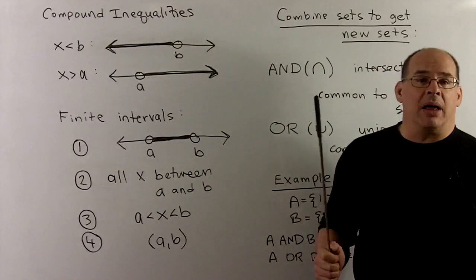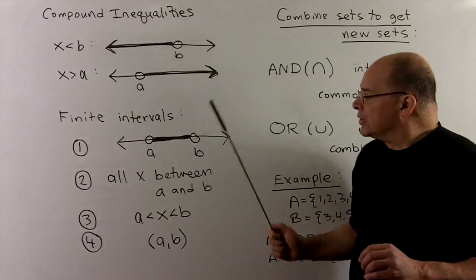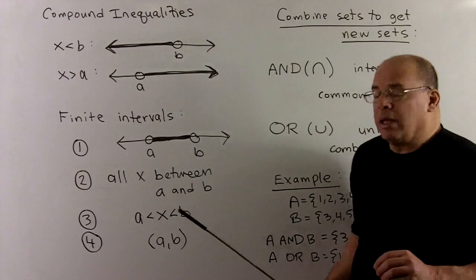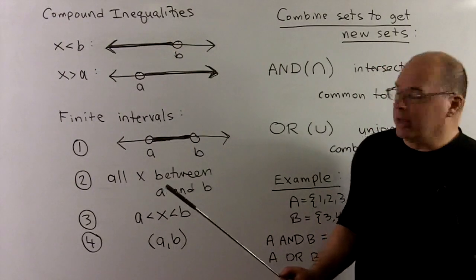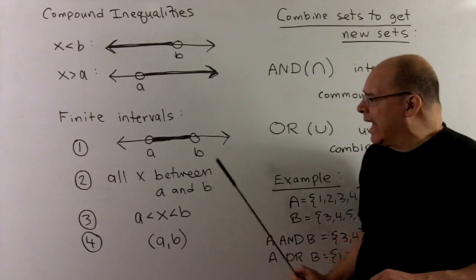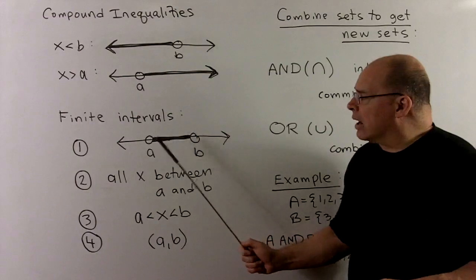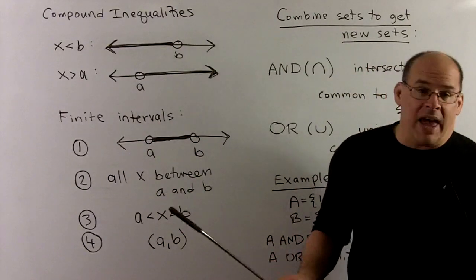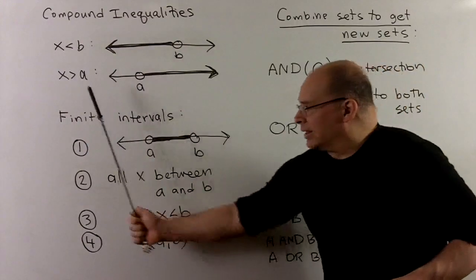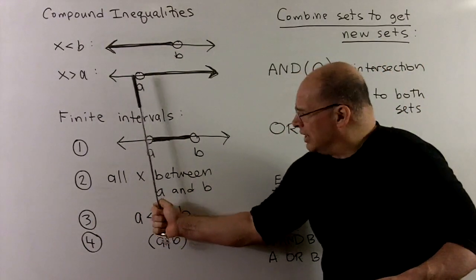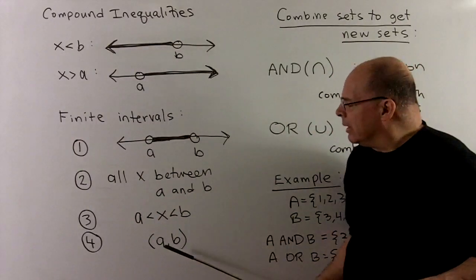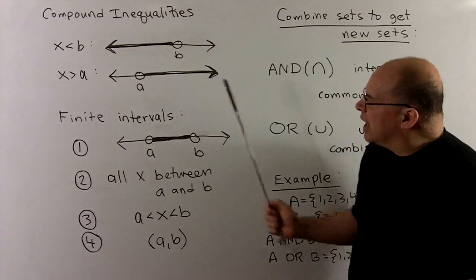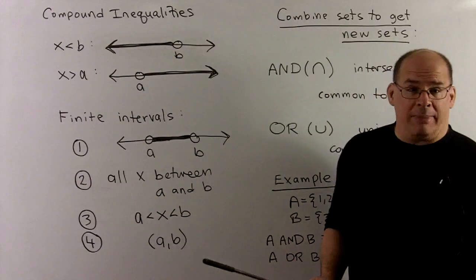First, let's talk about the notation. We could start with a less than x less than b. In plain English, this is just all x between a and b. The picture is: mark off a, mark off b — a has to be to the left of b — then shade in everything in the middle. For interval notation, we start at a and stop at b, using parentheses since we're not keeping a or b. This describes the different ways to represent finite intervals.